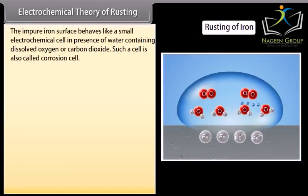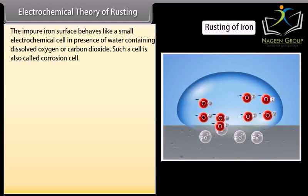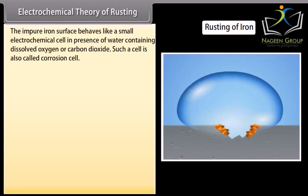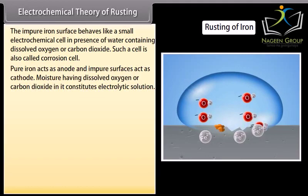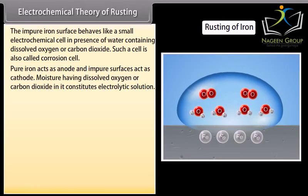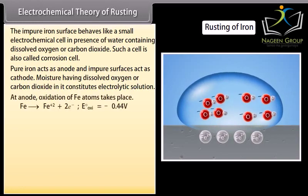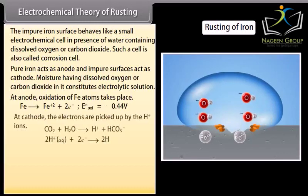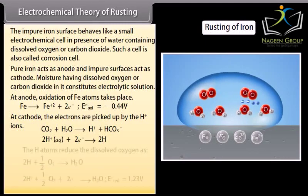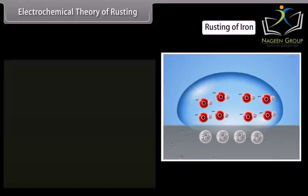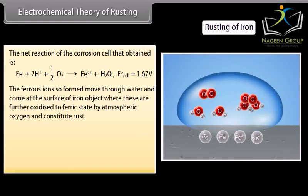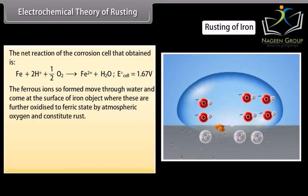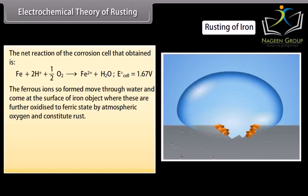Electrochemical theory of rusting. According to this theory, the impure iron surface behaves like a small electrochemical cell in presence of water containing dissolved oxygen or carbon dioxide. Such a cell is also called corrosion cell. Pure iron acts as anode and impure surfaces act as cathode. Moisture having dissolved oxygen or carbon dioxide in it constitutes electrolytic solution. At anode, oxidation of iron occurs. At cathode, the electrons are picked up by H+ ions. The hydrogen atoms reduce the dissolved oxygen. The ferrous ions so formed move through water and come at the surface of iron object where these are further oxidized to ferric state by atmospheric oxygen and constitute rust.